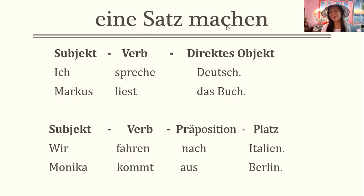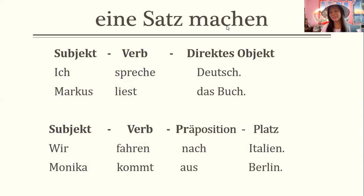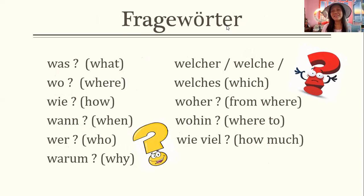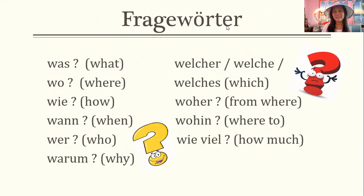What are the question words? Was means 'what,' wo means 'where,' wie means 'how,' wann means 'when,' wer means 'who,' warum means 'why.' And then you have the article-based question words: welcher for masculine, welche for feminine, welches for neuter. Woher means 'from where,' wohin means 'to where,' and wie viel means 'how much.'